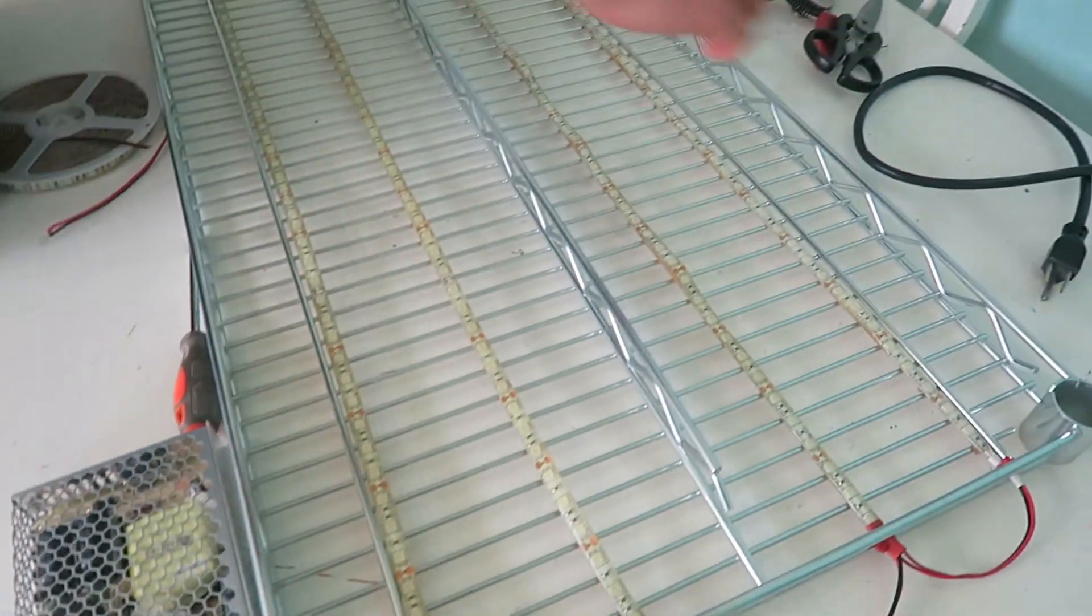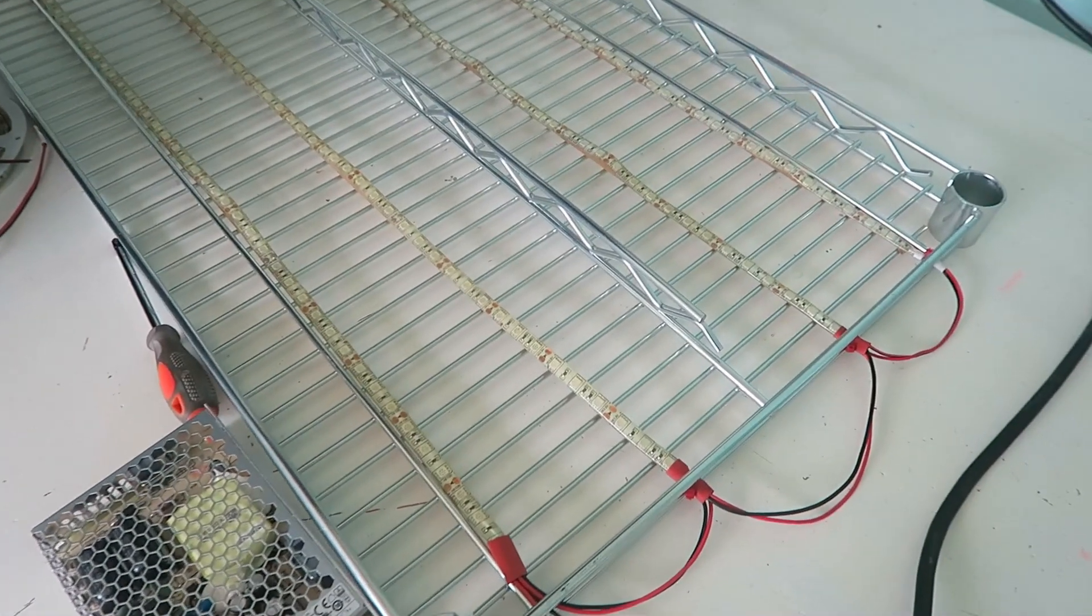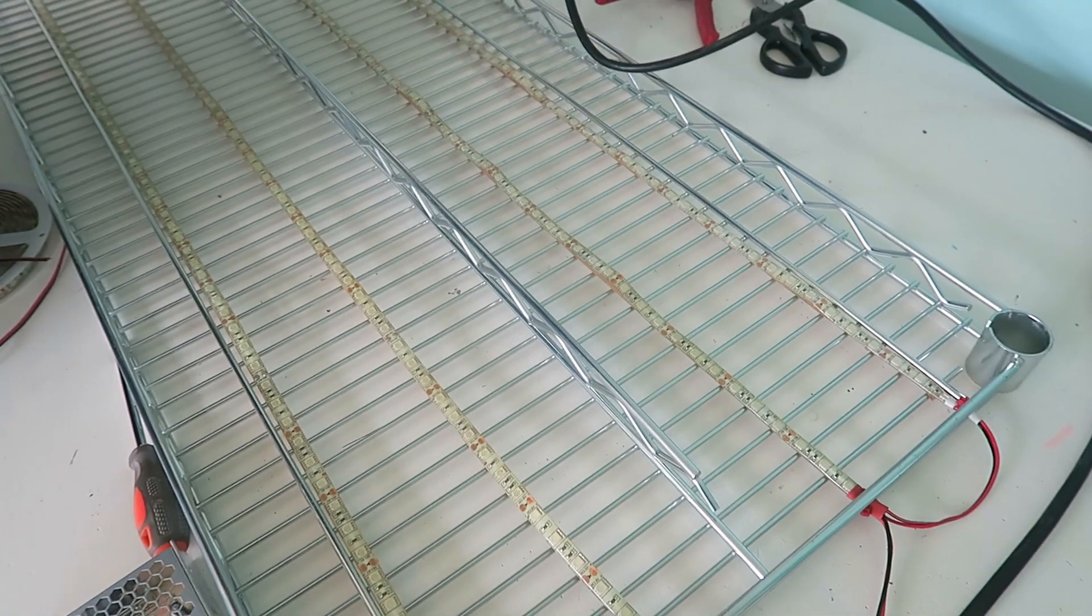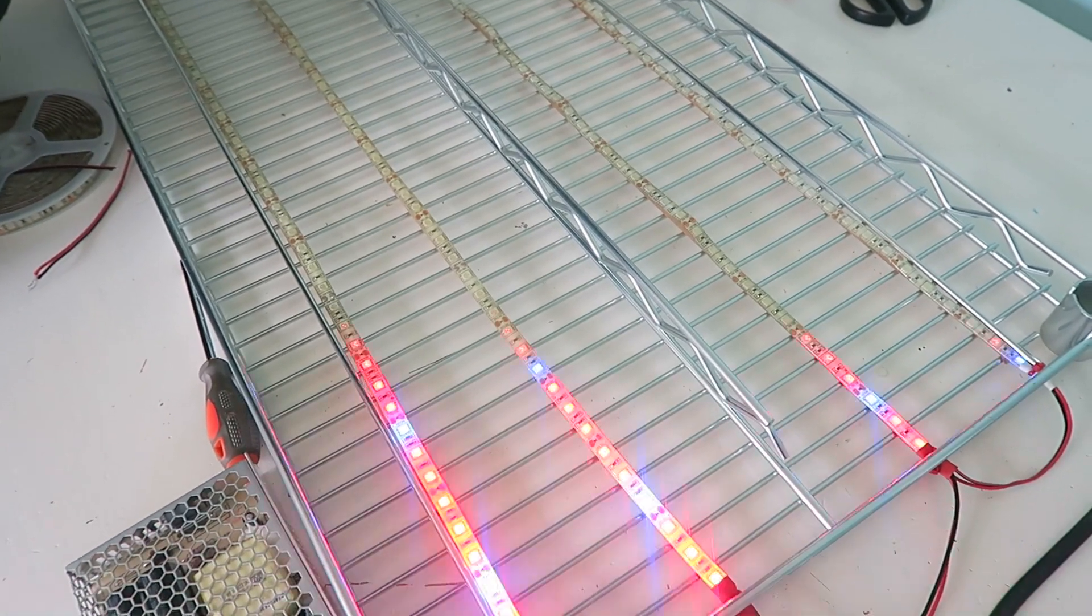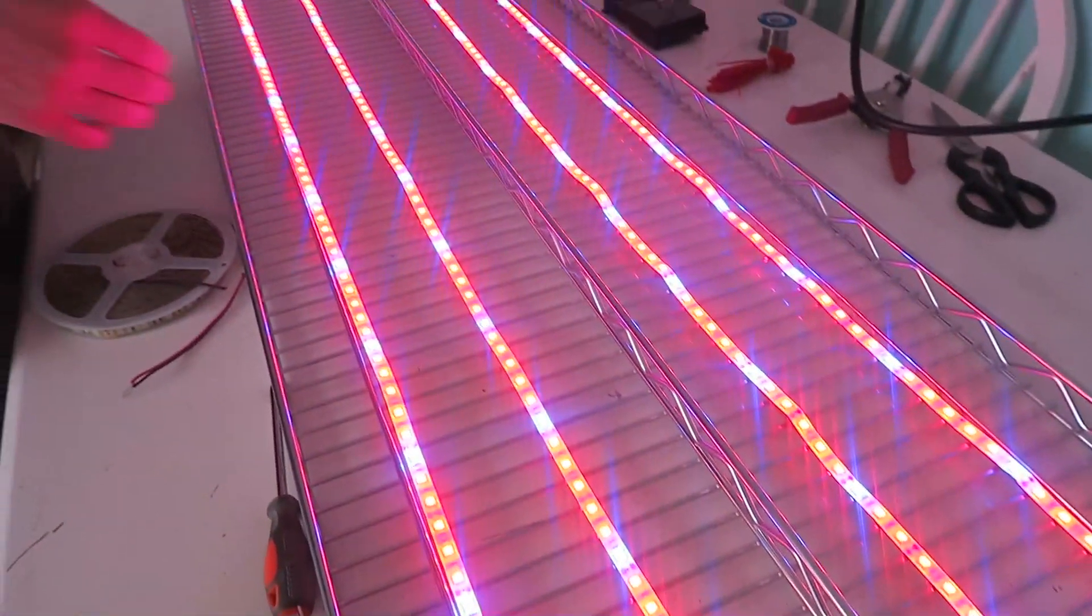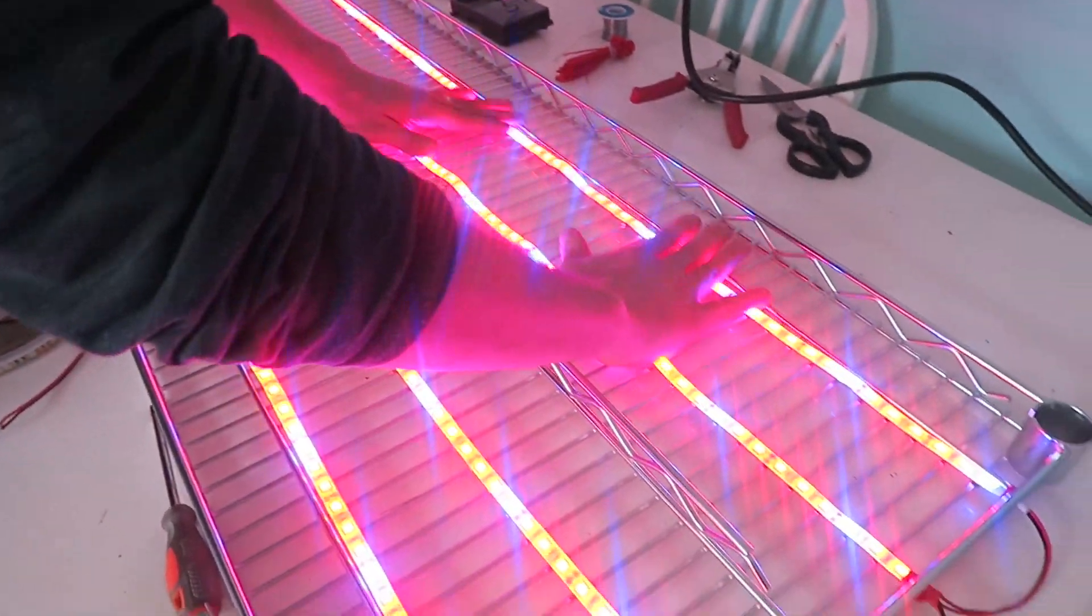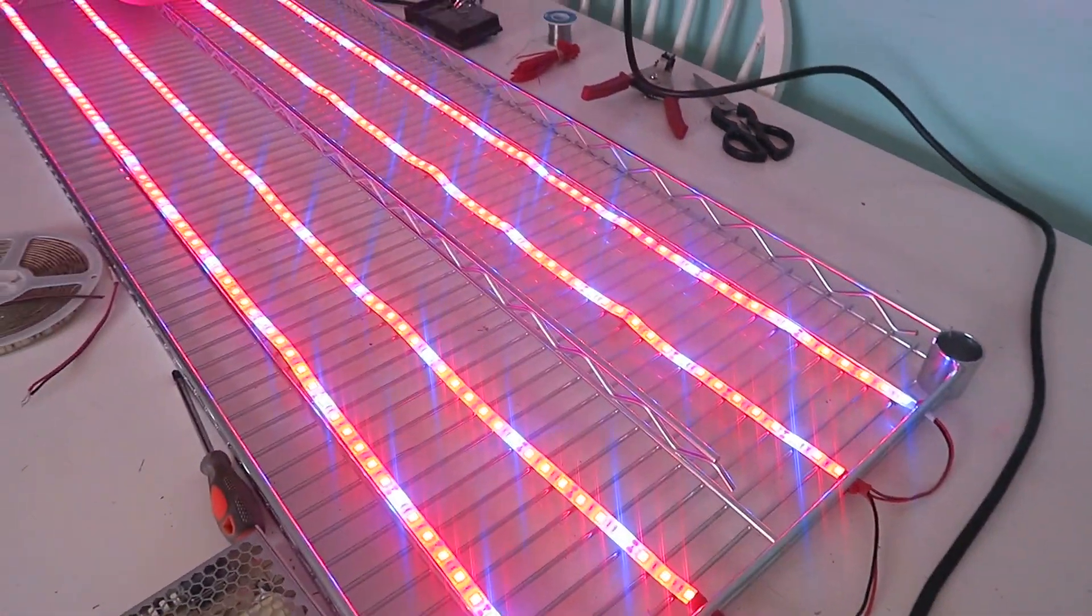So now I can show you, just plug it in and show you what it's going to look like. And after I'll show you when it's mounted to the light. So there it is. So that's how you make a cheap grow light.